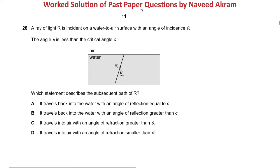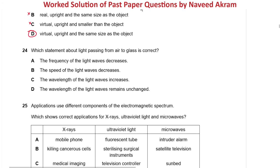Checking the options: option A says it travels back into the water — no, because theta is less than the critical angle. If theta were greater than the critical angle, it would travel back into the water. So options A and B are incorrect. Option C says it travels into the air with an angle of refraction greater than theta. Yes — when light moves from water to air, it bends away from the normal, meaning the angle of refraction is greater than the angle of incidence. So option C is the right answer.